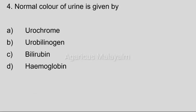Fourth question: Normal color of urine is given by? Answer options — Option A: Urochrome. Option B: Urobilinogen. Option C: Bilirubin. Option D: Hemoglobin. Correct answer: Option A, Urochrome.